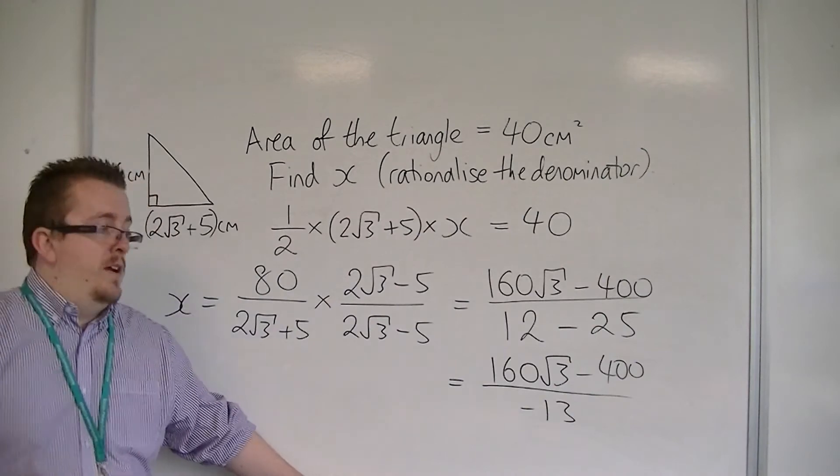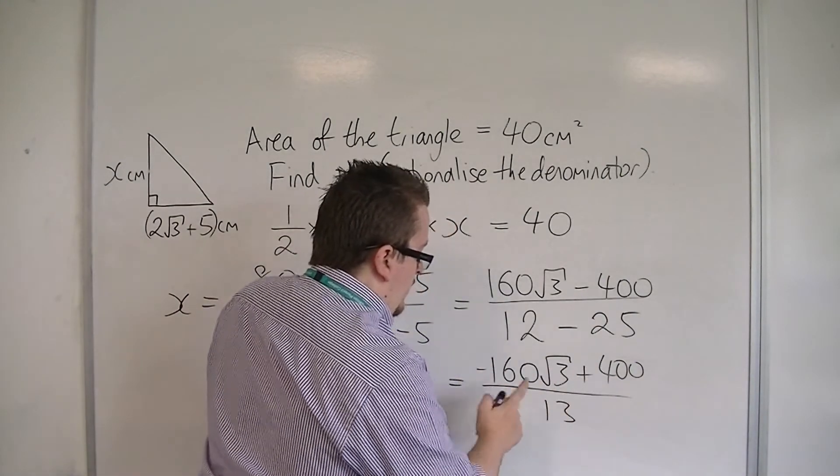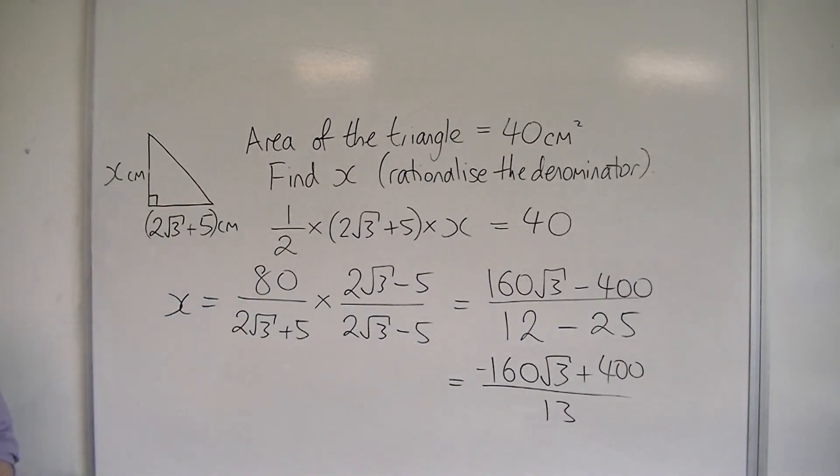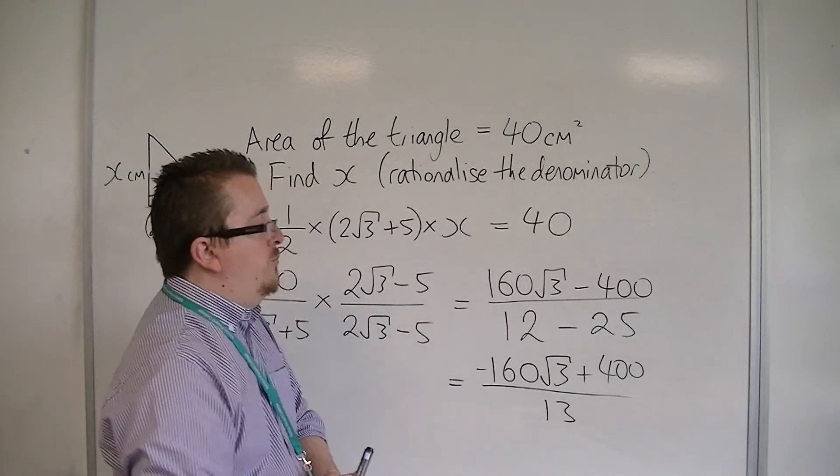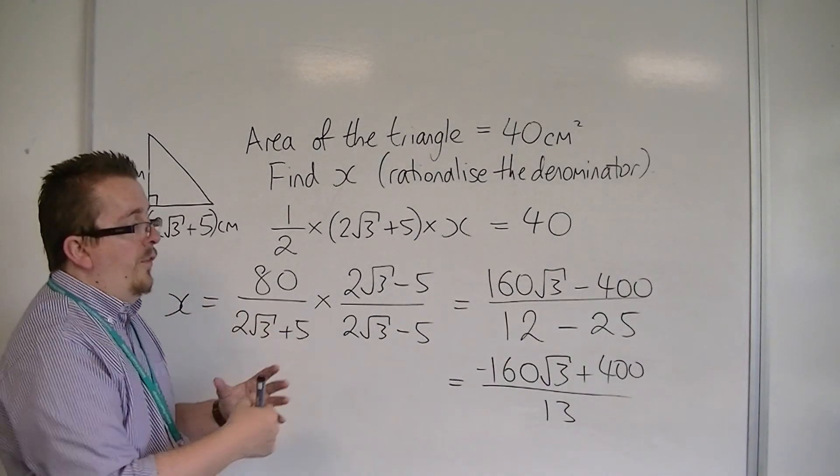If I divide top and bottom by minus 1, then I can write it like that. So, 400 minus 160 root 3 all over 13, and that is the format that we wanted x to be.